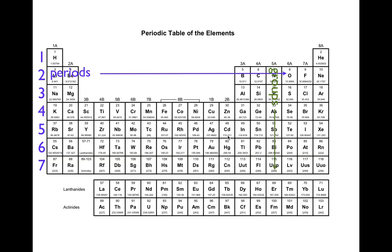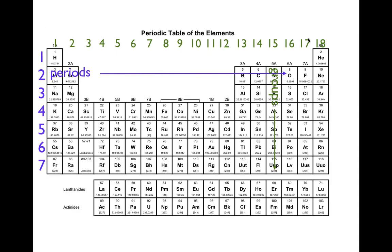The groups are the columns — each column is a group, and nowadays we number them 1 through 18. Some periodic tables use 1A, 2A, 3B, 4B, or Roman numerals — those are an archaic group numbering system. We now just say group 1, group 2, group 13, 14, 15, 16, 17, and the noble gases, group 18.